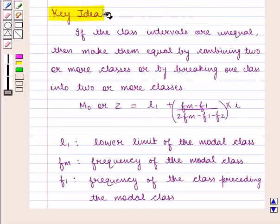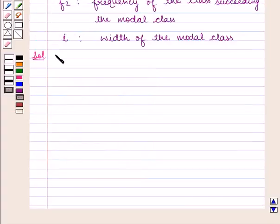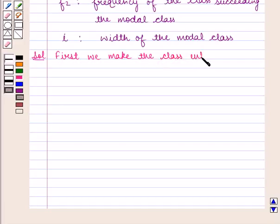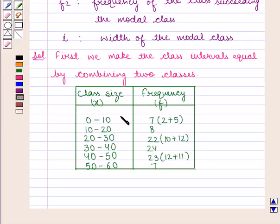With this key idea, we shall proceed with the solution. Since the given class intervals are unequal, we'll make them equal by combining two or more classes. In each case, the width of the class interval becomes 10.